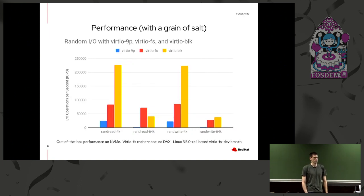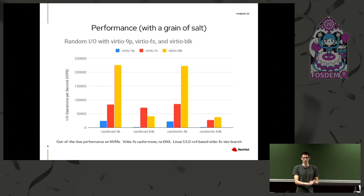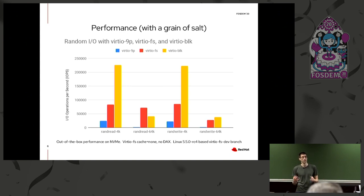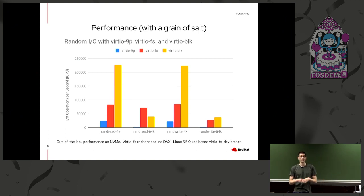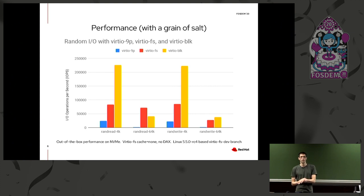Here's a brief benchmark I ran recently. I'm comparing Virtio 9P — a previous shared file system in QEMU with Linux support — VirtaFS, and Virtio block. Keep in mind these things have lots of configuration settings; what you're seeing is just the default setup of all of these. The main message is: if you're already using Virtio 9P, take a look at VirtaFS because it should perform at least as well. VirtaFS is going to be available starting from QEMU 5.0.